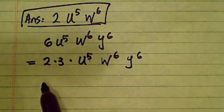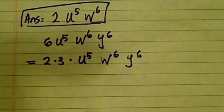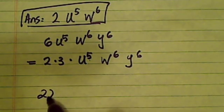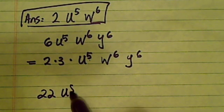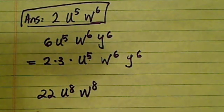The other term we have is 22u^8w^8. So 22 breaks down to 2 times 11, and then u^8